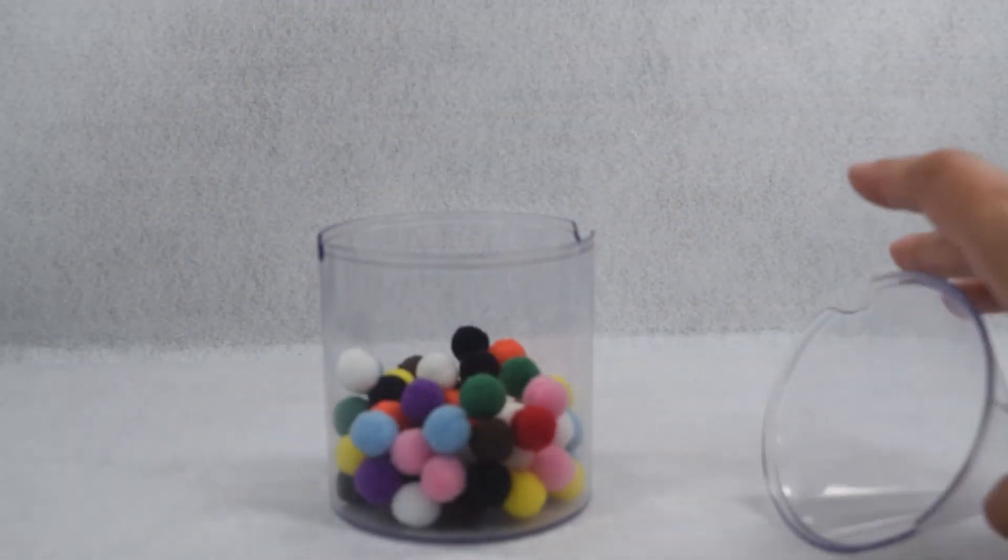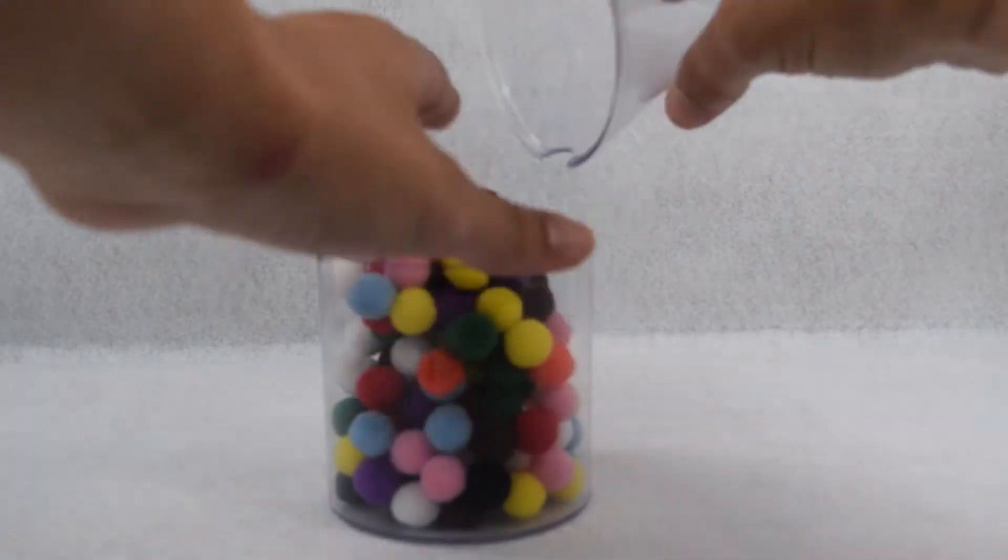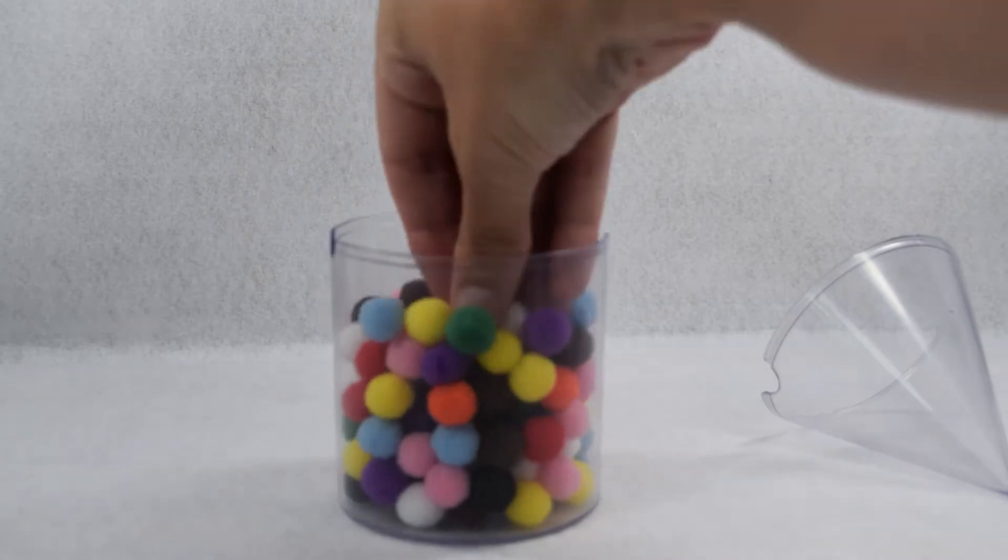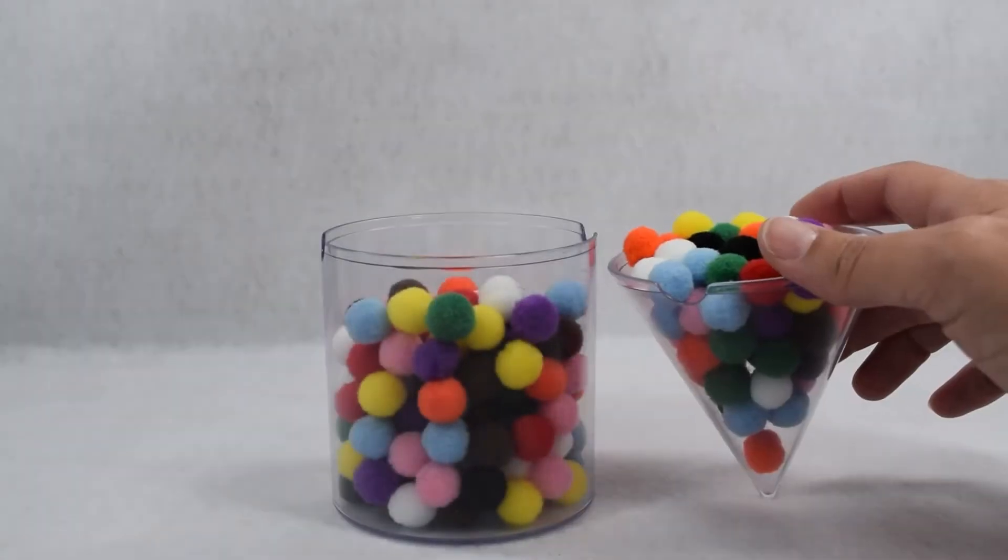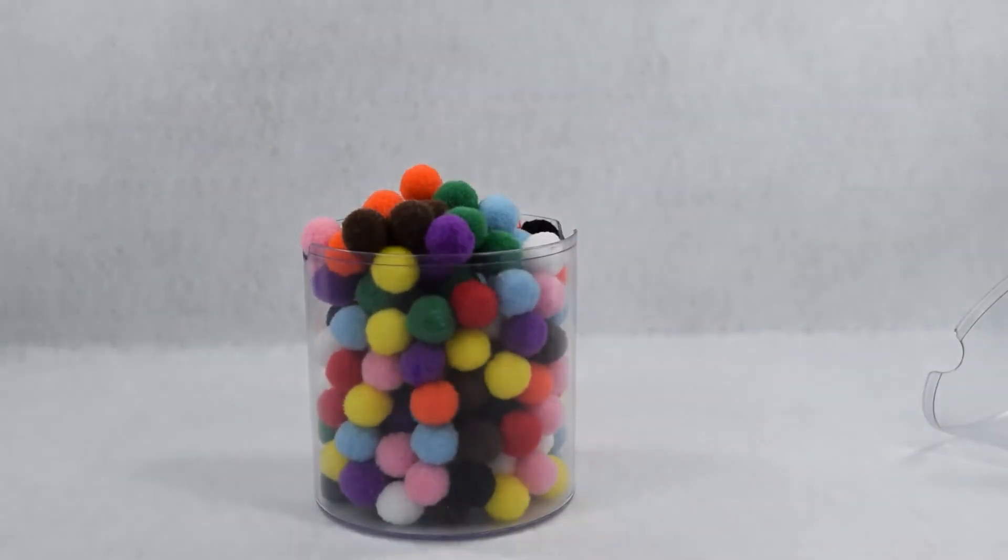We can see the volume of our cone fills only a small portion of the cylinder. We'll fill our cone a second time and pour that into our cylinder. We can see there's still some space left. We'll fill our cone a third time and pour it into our cylinder also.